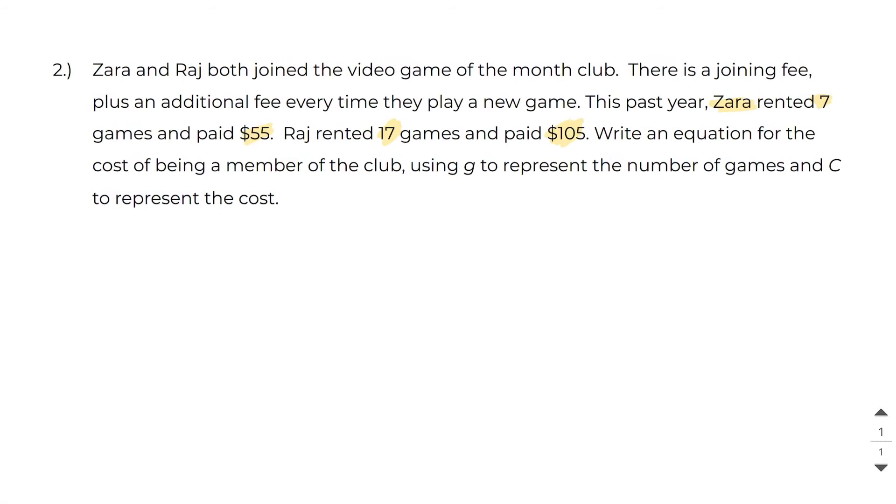So what I would do here is I would actually create my table of values. So first thing I want to do is make a table. And we've got the number of games versus the cost, which is measured in dollars. And here we're told that Zara rented seven games and paid $55 and that Raj rented 17 games and paid $105.